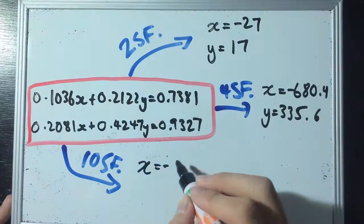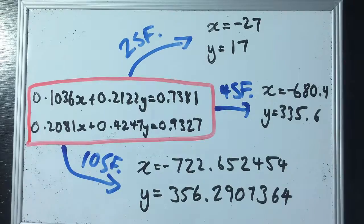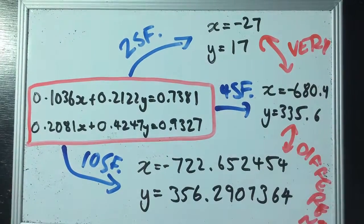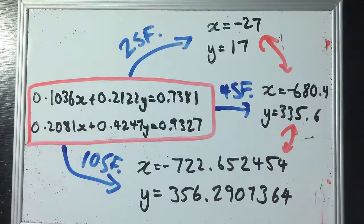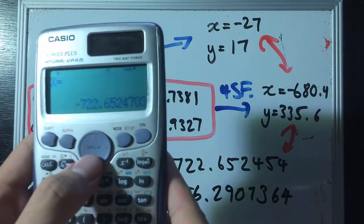It shows that keeping only a few significant figures at an early stage of calculation can give an answer that is very inaccurate from the actual answer. In fact, if I use a calculator to try to solve this pair of simultaneous equations, I'll get a different answer again.